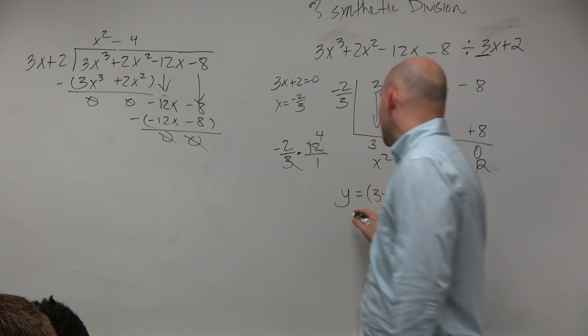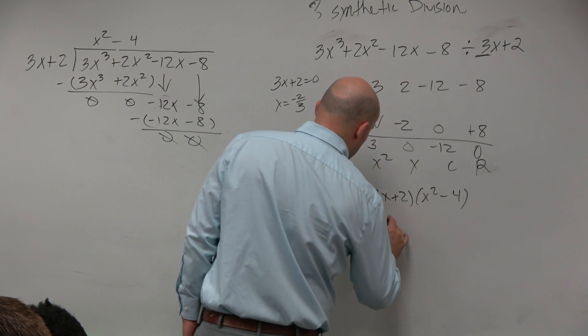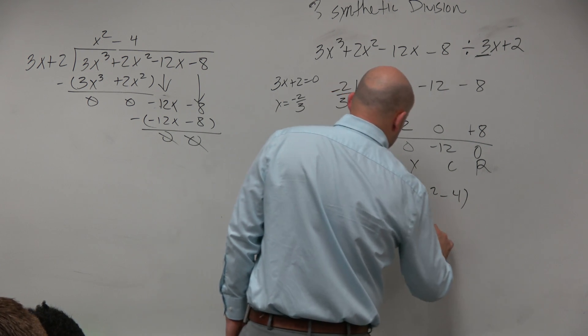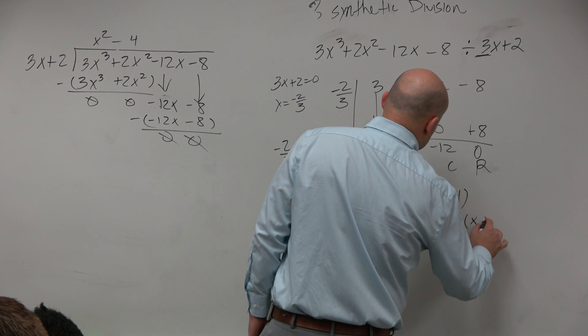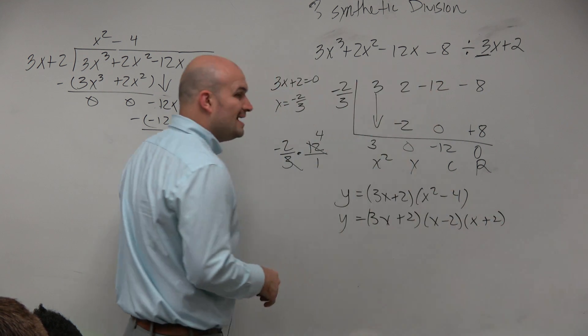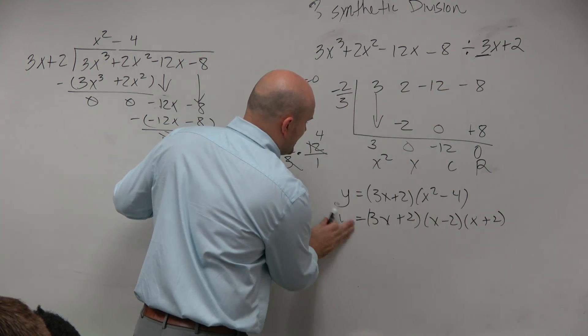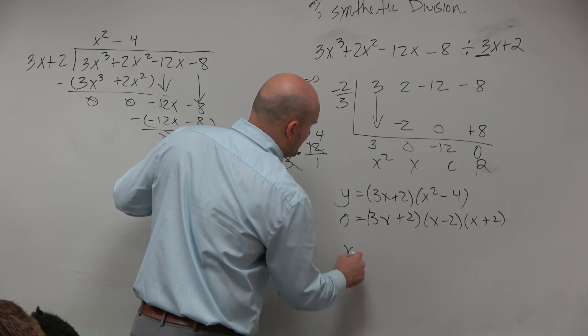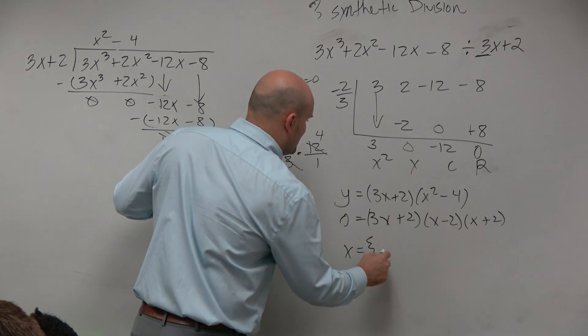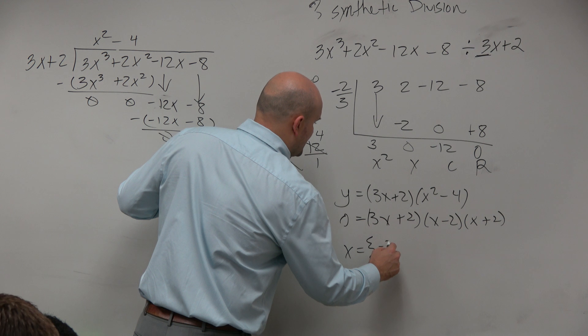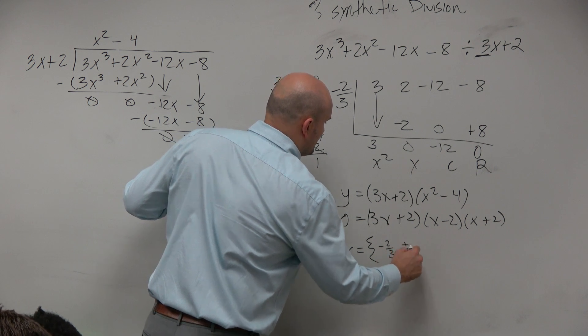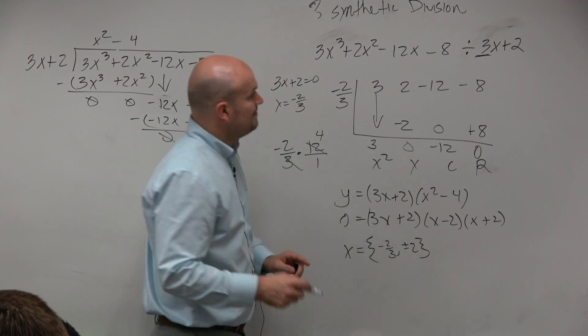Then, if I wanted to write the linear factorization, I could say y equals 3x plus 2 times x minus 2 times x plus 2. And then, guys, if I just wanted to find all the zeros, I could set that equal to zero and solve. And our zeros would be negative 2 thirds plus or minus 2.